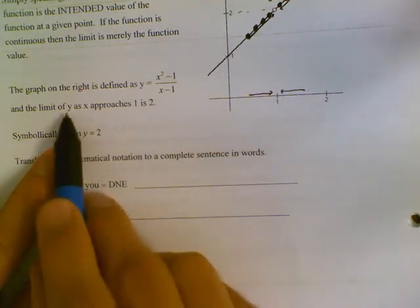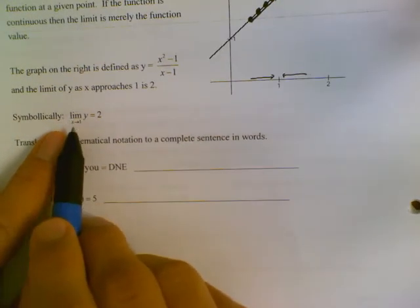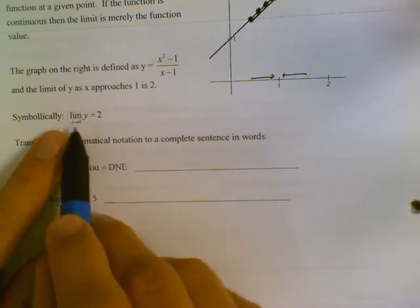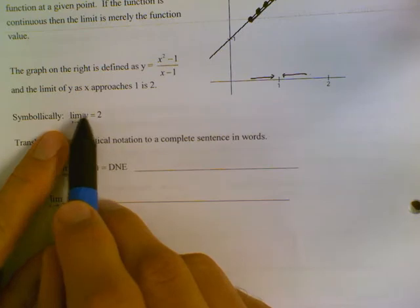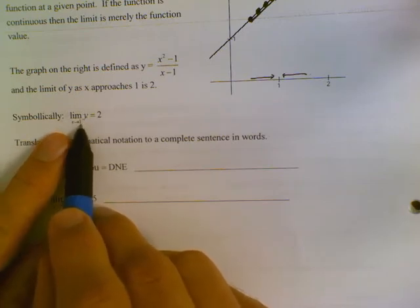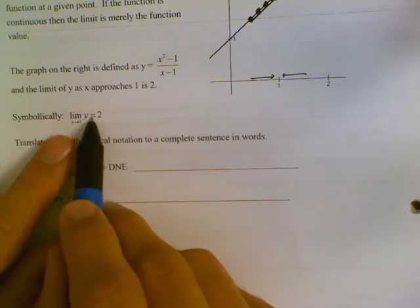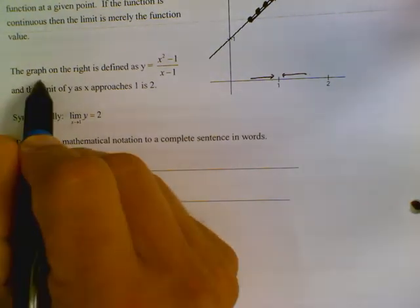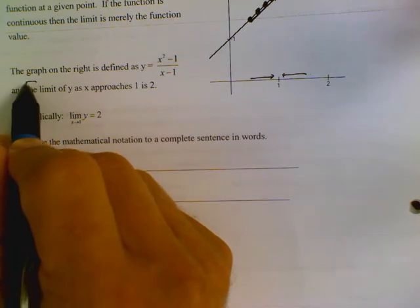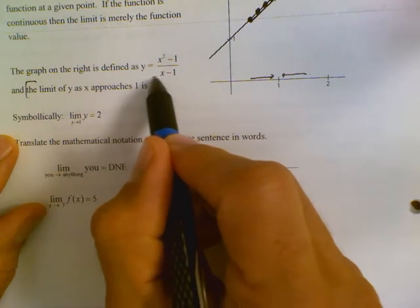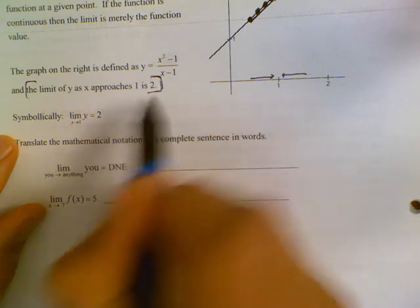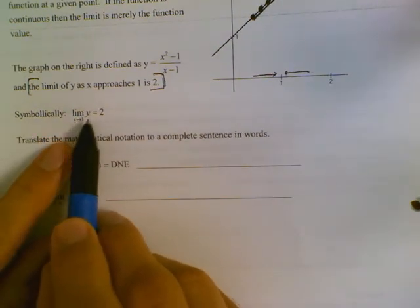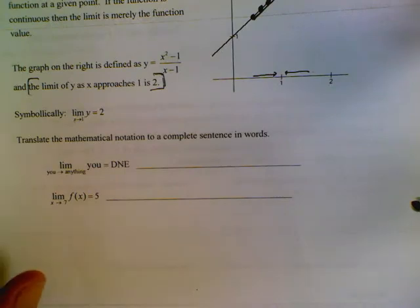We write it symbolically as the limit of y as x approaches 1 is equal to 2. You might want to practice rewriting that one out. So the limit of y as x approaches 1 is equal to 2.